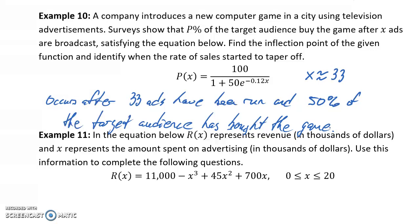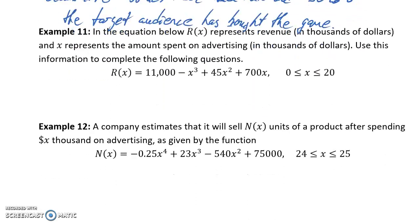So again, in terms of application, this would tell a business that after 33 ads have been run, after about 50% of customers, the target audience has bought the game, the game will still continue to sell, but at a slower rate than before. So it's through that window of the first 33 ads where they're seeing the most rapid return on that advertising investment.